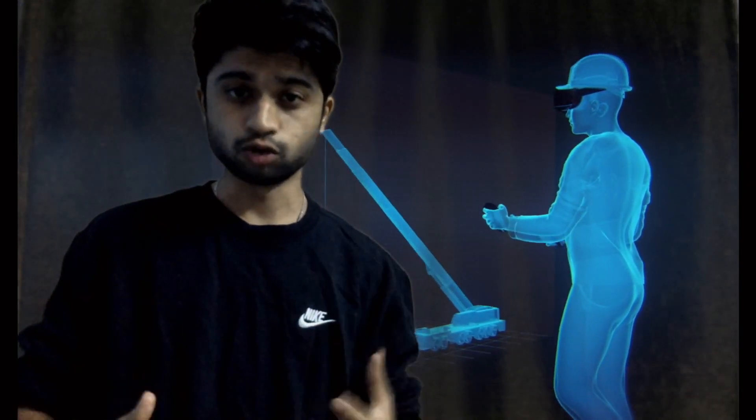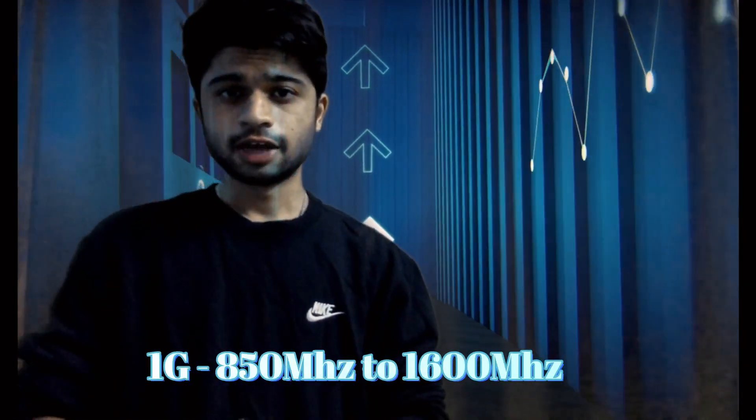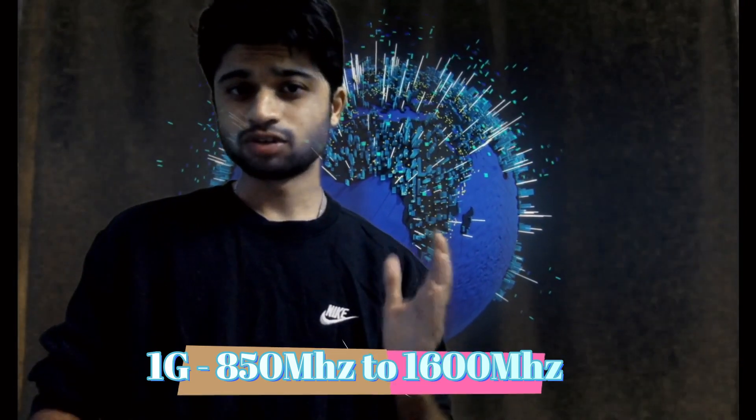So before getting into how the 5G conventional technique works, we have to think about the previous generations and what they have used. Because every generation is using certain parts of the frequencies in an electromagnetic wave for their operations. So in 1G technology they are using 850 or nearly 1600 megahertz of frequency for their operation. And in 2nd and 3rd generations combined, they operated nearly at 2.1 or 2.5 gigahertz of frequencies.